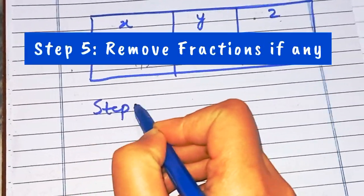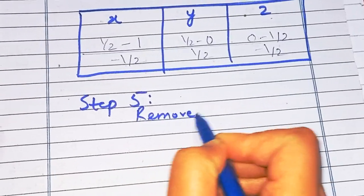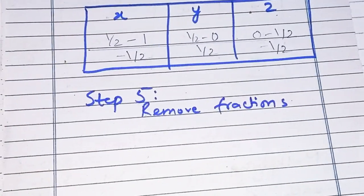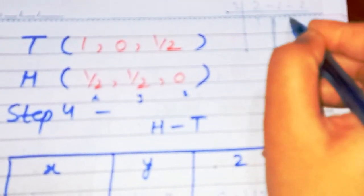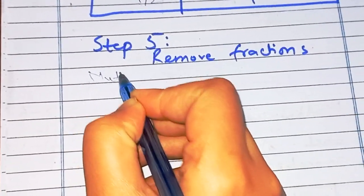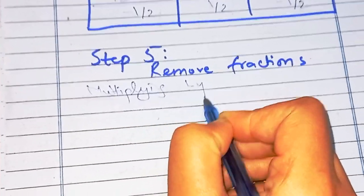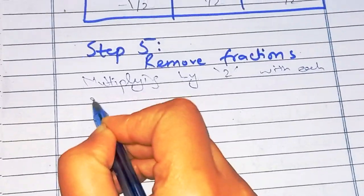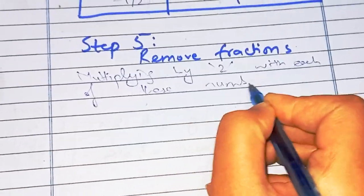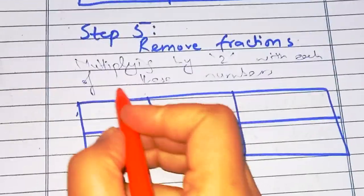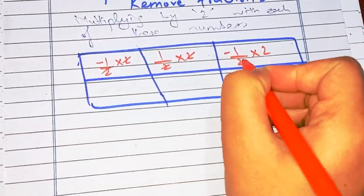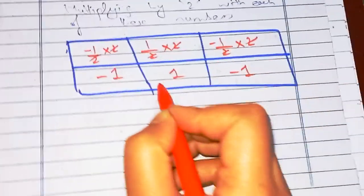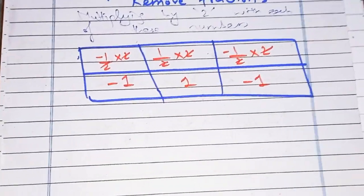Step five is to remove fractions. Fractions are removed by multiplying the LCM of the denominators with each of these numbers. The denominators are all two, so the LCM is two. Multiplying each number by two: −1/2 × 2 = −1, 1/2 × 2 = 1, −1/2 × 2 = −1. So we get −1, 1, −1.